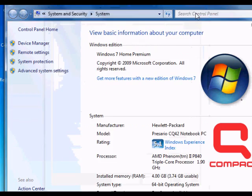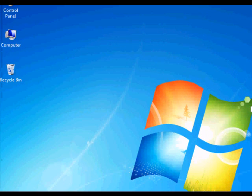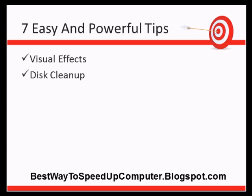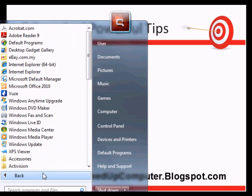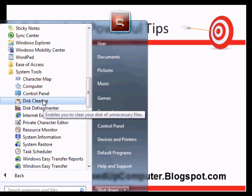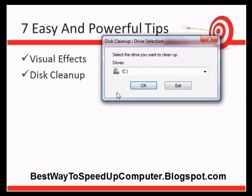Once applied, you'll immediately see your computer running 50 to 100 percent faster. The next tip is Disk Cleanup — a software provided with Windows that you can use to clean up unwanted files that are slowing your computer. To find it, click the Start menu, choose All Programs, go to Accessories, then System Tools, and look for Disk Cleanup.